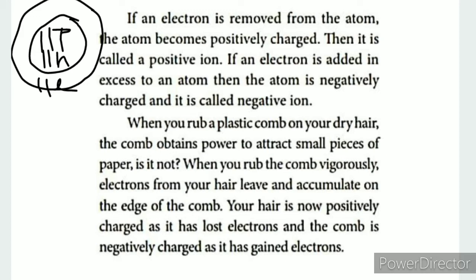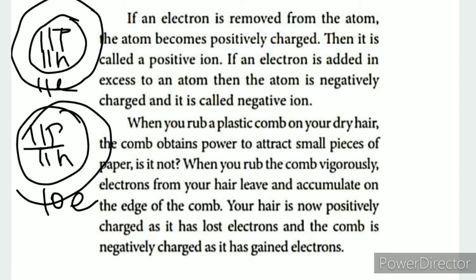When one electron is removed from an atom, say sodium with 11 protons and 11 electrons, it now has 11 protons but only 10 electrons. Since protons outnumber electrons by 1, the atom becomes positively charged - a positive ion.